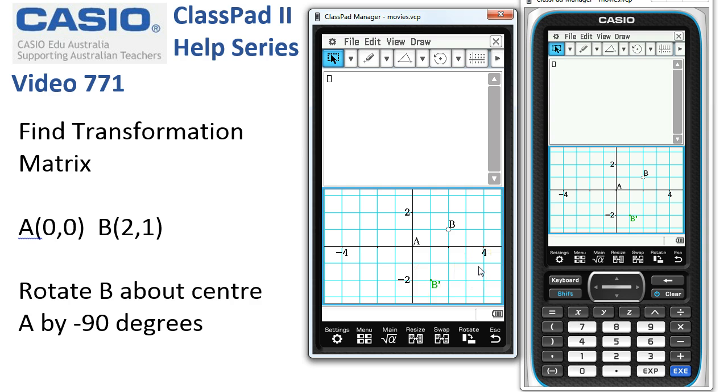Now, to determine the transformation matrix for that, B is already selected. I'm going to select its image. So we've selected the object, the image, and we've just let ClassPad carry out a transformation.